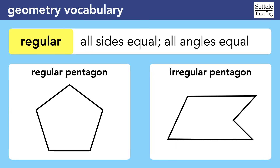A regular polygon has all sides equal and all angles equal. You can see that the regular pentagon looks well-balanced because all of its sides are equal, and so are each of its interior angles. The irregular pentagon still has the required five sides to be called a pentagon, but those sides don't have any real pattern.